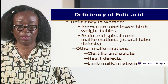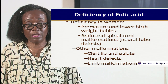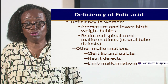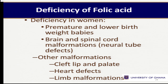Deficiency in women can lead to premature and low birth weight babies, because if the woman does not have enough blood, nutrients to the baby are affected. There is also brain and spinal cord malformation. Because folic acid plays an important role in cell division, when there is lack of folic acid, brain development is hampered and the spinal cord cannot develop properly. Together this is known as neural tube defects, which is very common.